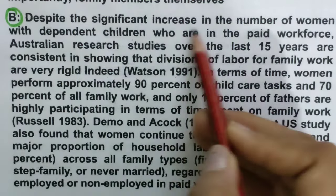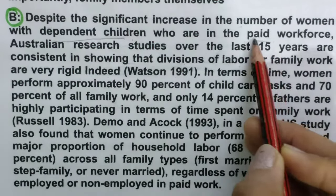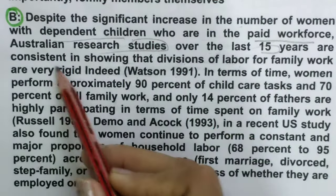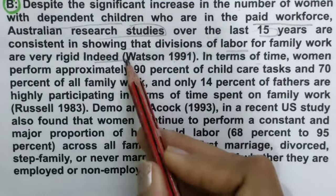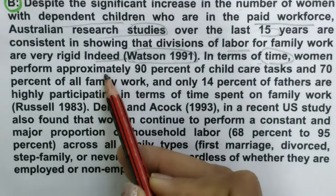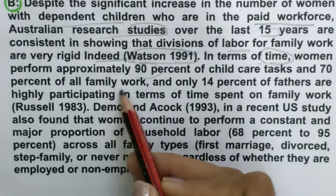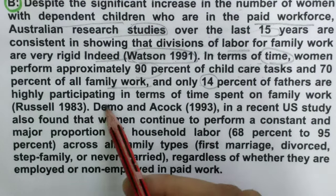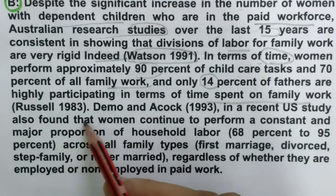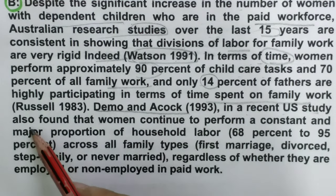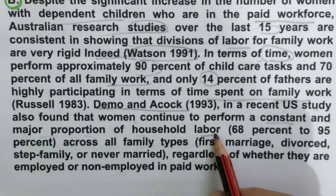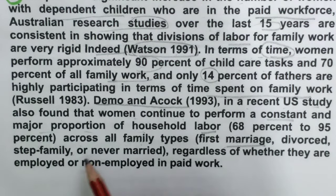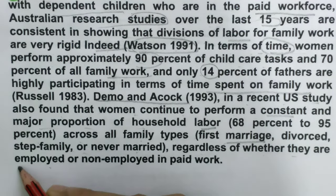Paragraph B reads: 'Despite the significant increase in the number of women with dependent children who are in the paid workforce, Australian research studies over the last 15 years are consistent in showing that divisions of labour over family work are very rigid. Indeed, women perform approximately 90 percent of child care tasks and 70 percent of all family work. Only 14 percent of fathers are highly participating in terms of time spent on family work.' A recent US study also found that women continue to perform a constant and major proportion of household labour across all family types — first marriage, divorce, step-family — regardless of whether they are employed or not.